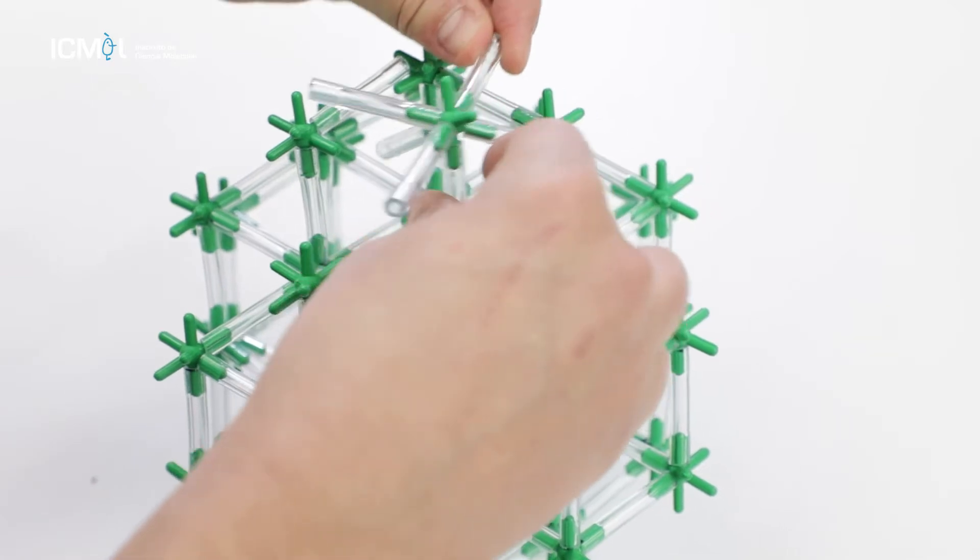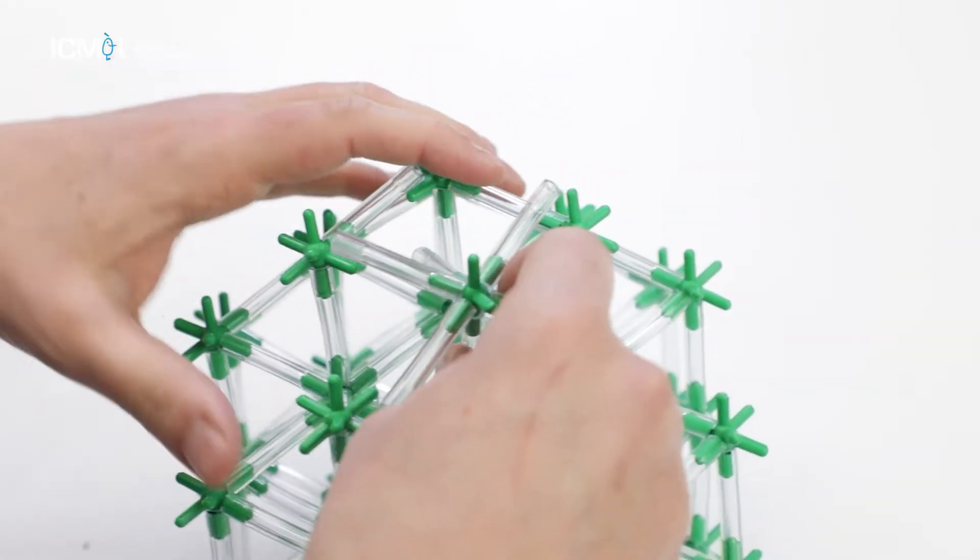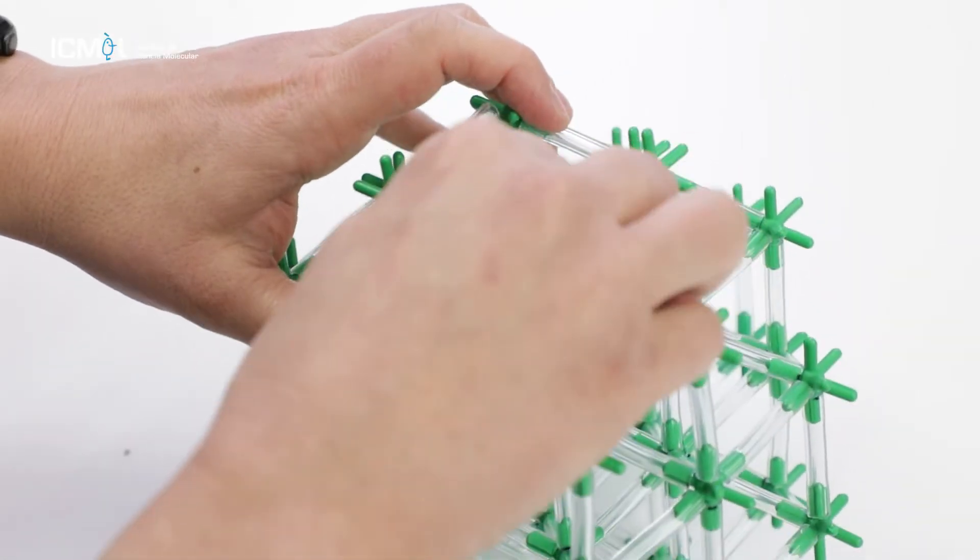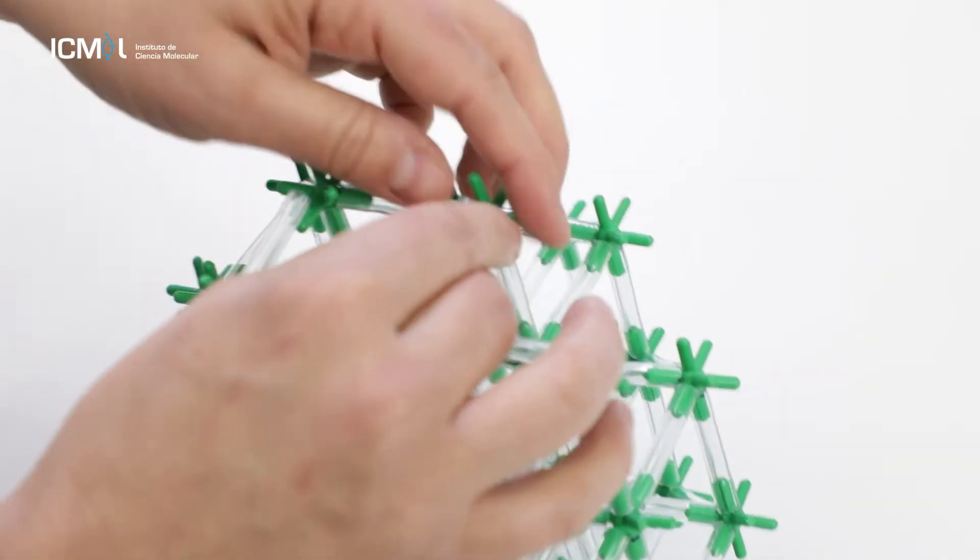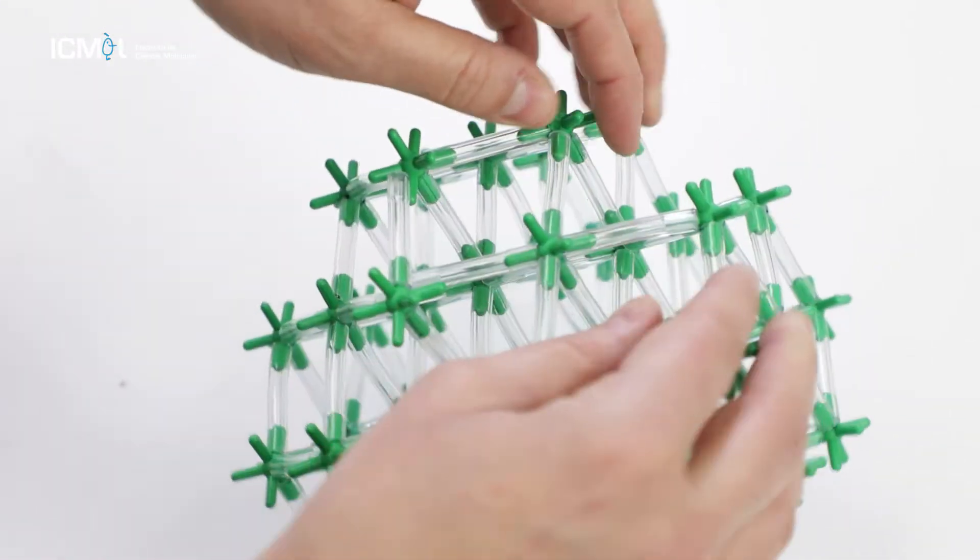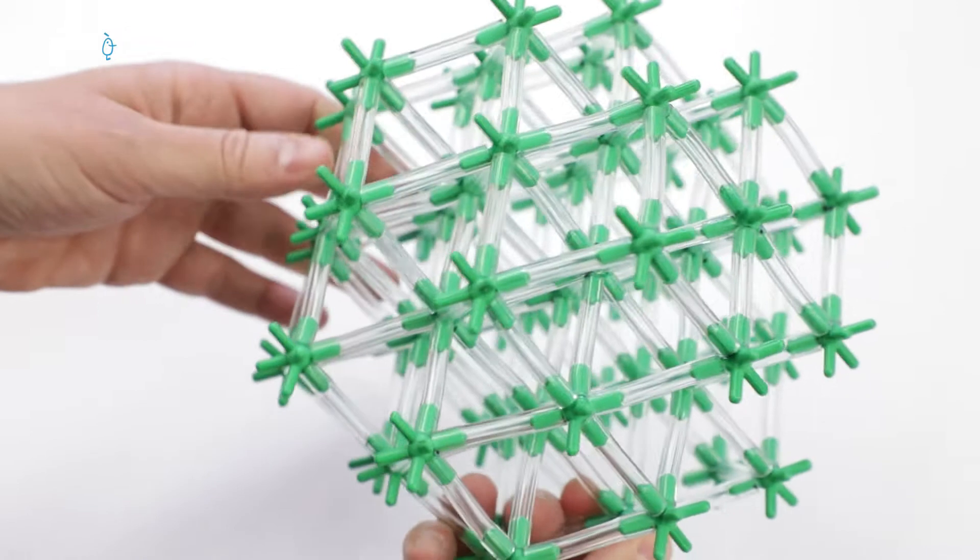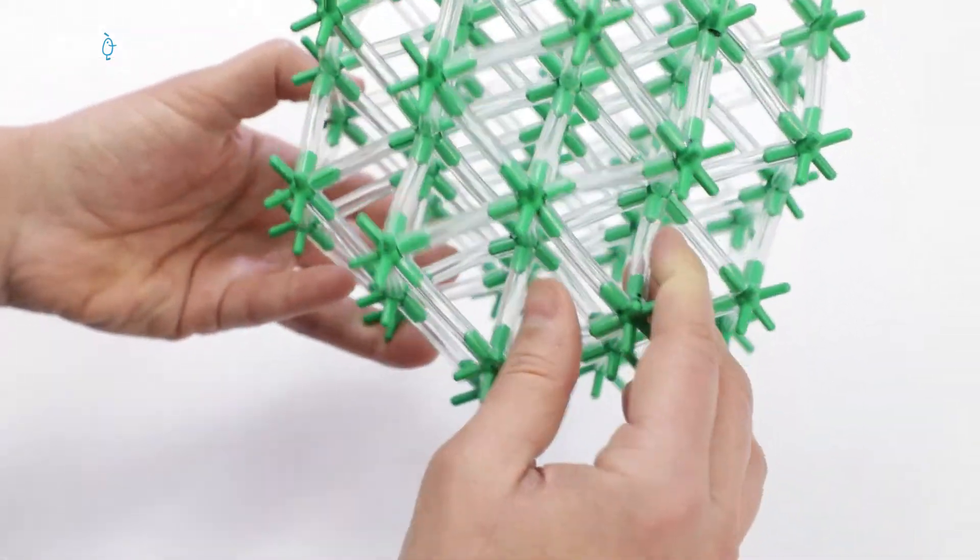When we work in MOF chemistry, we want to be producing crystals. So depending on how we combine these four variables, we are going to be able to control the formation of perfectly ordered crystals and also the possibility of repairing defects during their crystallization.